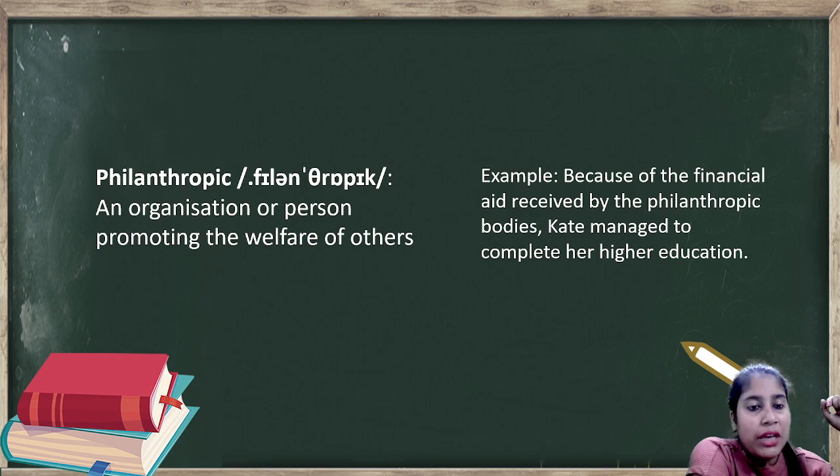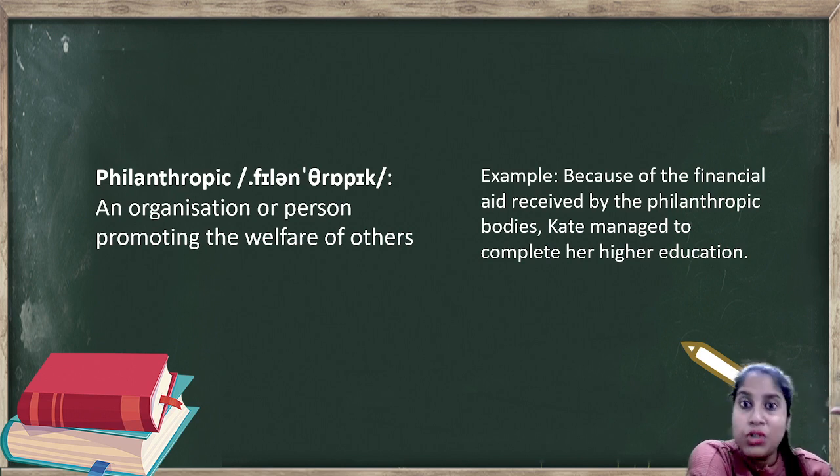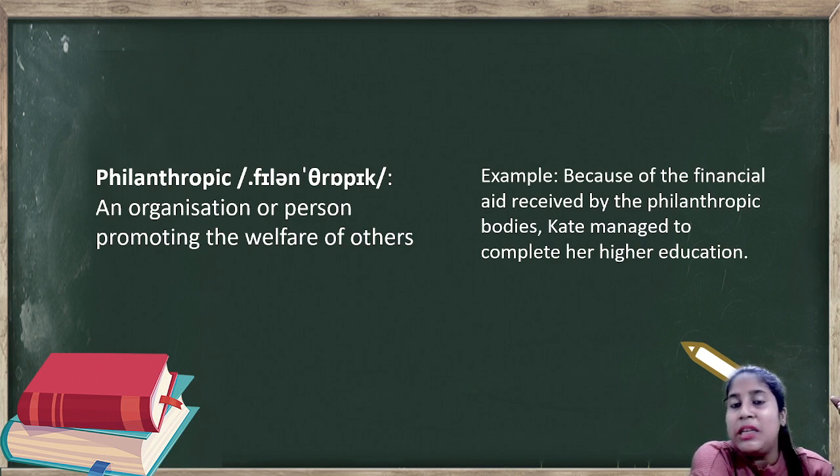Philanthropic. Philanthropic means an organization or person promoting the welfare of others. Here we have two root words I've taught you. There is a word called phil - phil means love or affinity towards something. Anthro means human-related. So for human welfare, if you donate money or donate anything, think good, do good, that is called philanthropy, and that nature is called philanthropic nature. Example: Because of the financial aid received by the philanthropic bodies, Kate managed to complete her higher education.